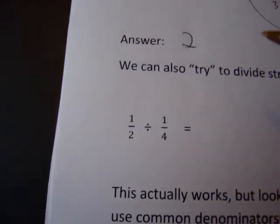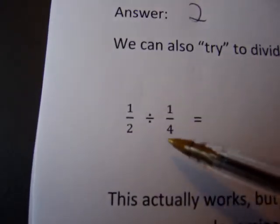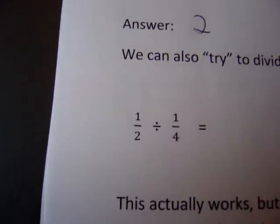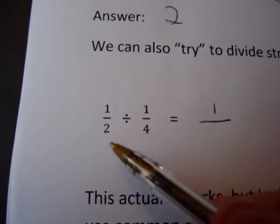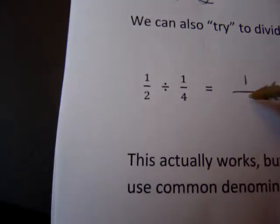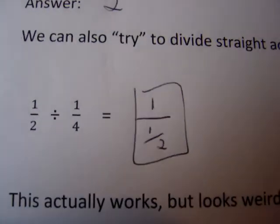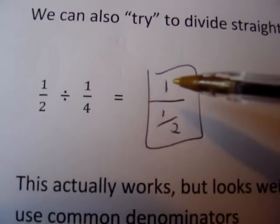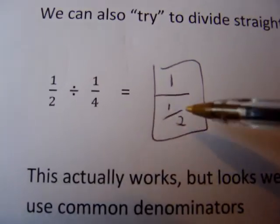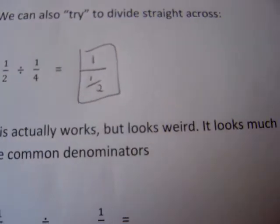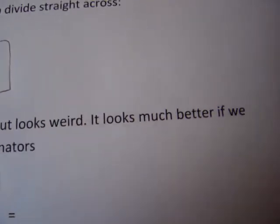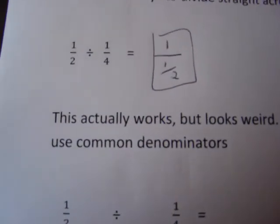We can also try to do this by dividing straight across. Here's our 1/2 divided by 1/4. 1 divided by 1 is 1, and 2 divided by 4 is 1/2. That looks like a real screwy fraction because we have 1 as our numerator and 1/2 as our denominator.